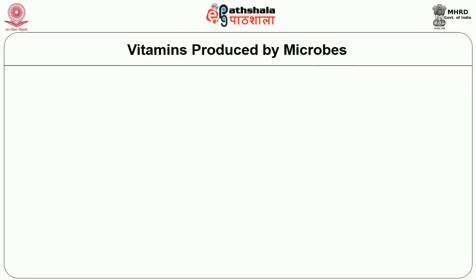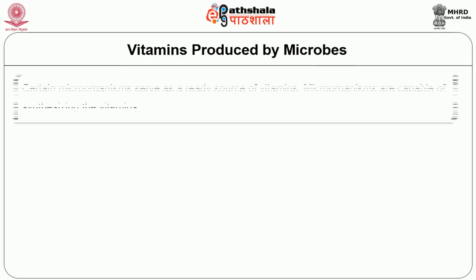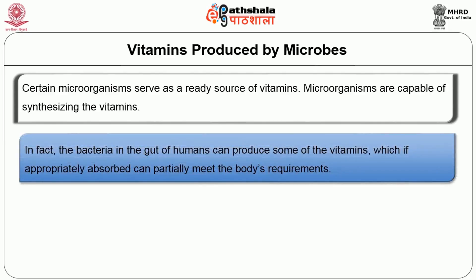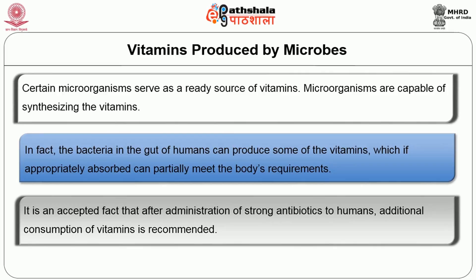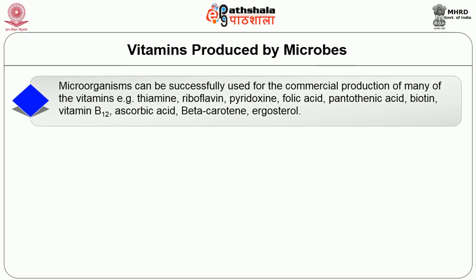Vitamins produced by microbes also have a vital role for humans. Certain microorganisms serve as a ready source of vitamins; microorganisms are capable of synthesizing vitamins. In fact, bacteria in the gut of humans can produce some vitamins which, if appropriately absorbed, can partially meet the body's requirements. After administration of strong antibiotics to humans, additional consumption of vitamins is recommended. Microorganisms can be successfully used for the commercial production of many vitamins, for example thiamine, riboflavin, pyridoxine, folic acid, pantothenic acid, biotin, vitamin B12, ascorbic acid, beta-carotene, ergosterol and so on.